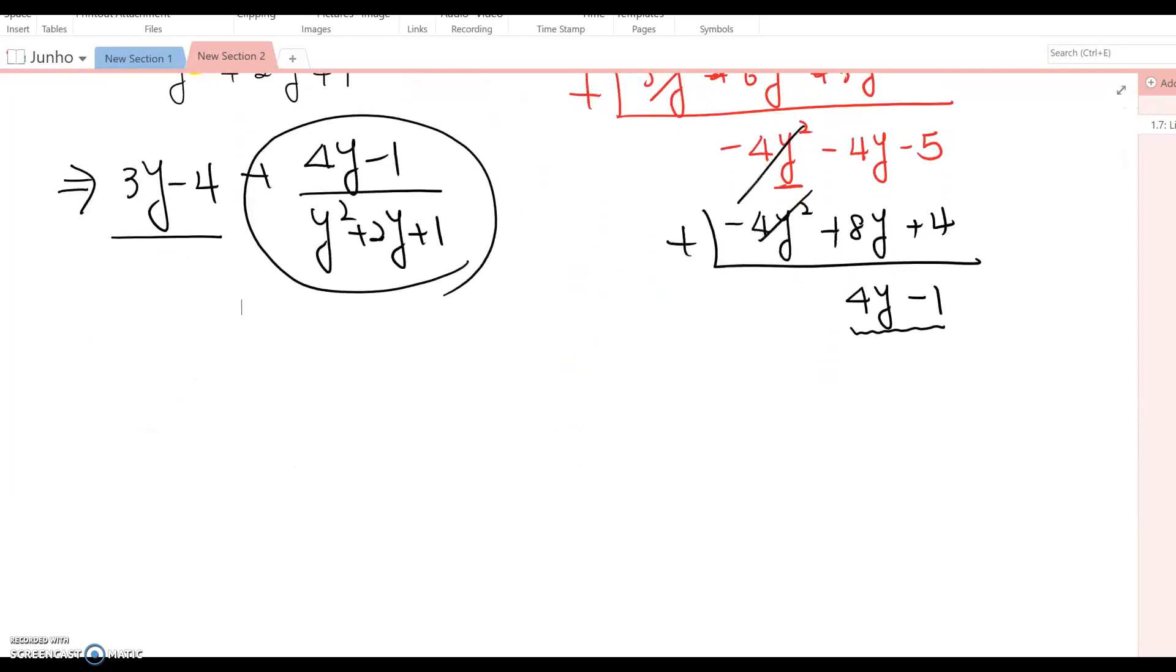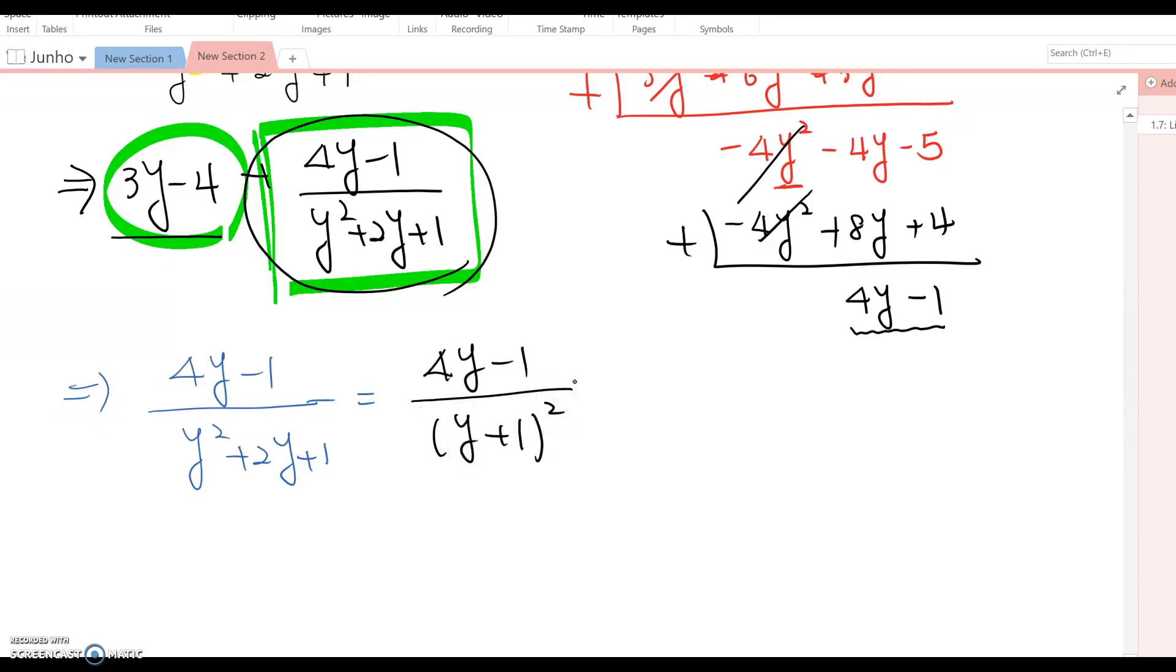We need to factor the denominator. So (4y - 1)/(y² + 2y + 1) becomes (4y - 1)/(y + 1)². Therefore, this fraction can be written as A/(y + 1) + B/(y + 1)².